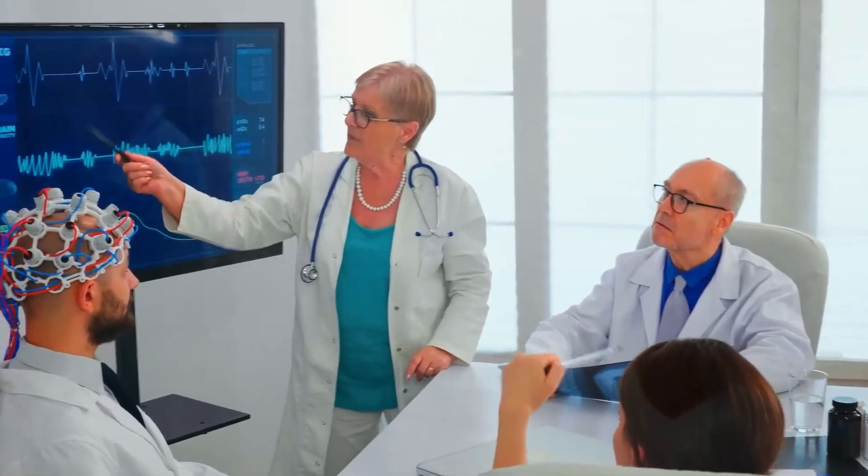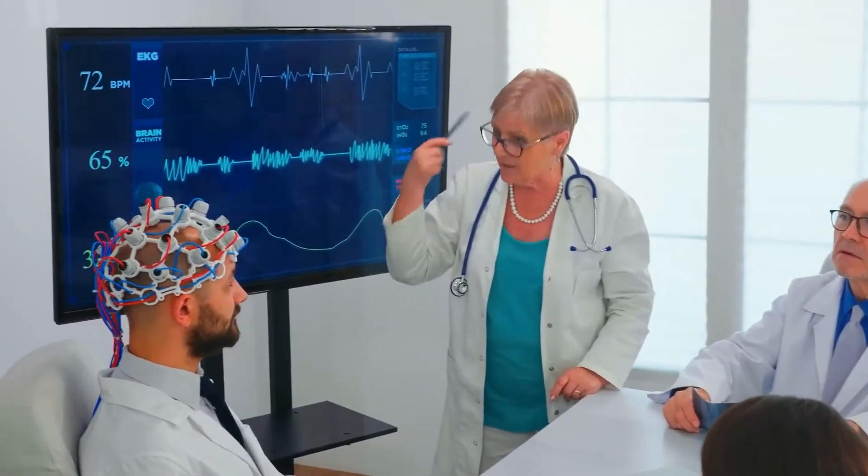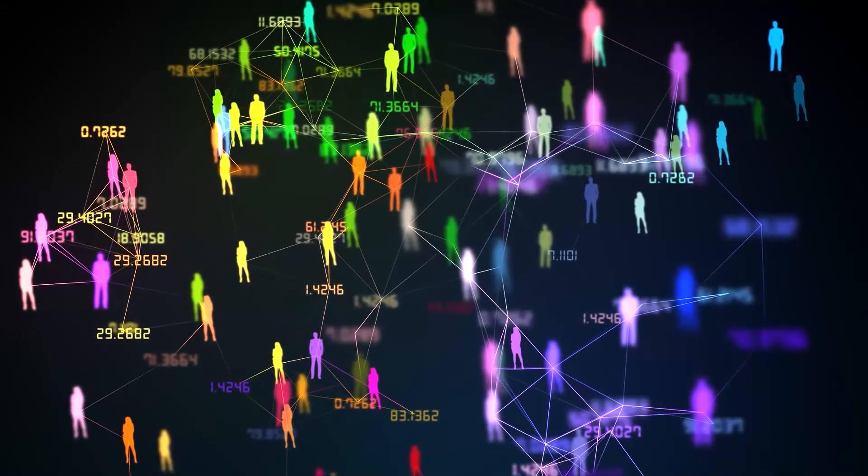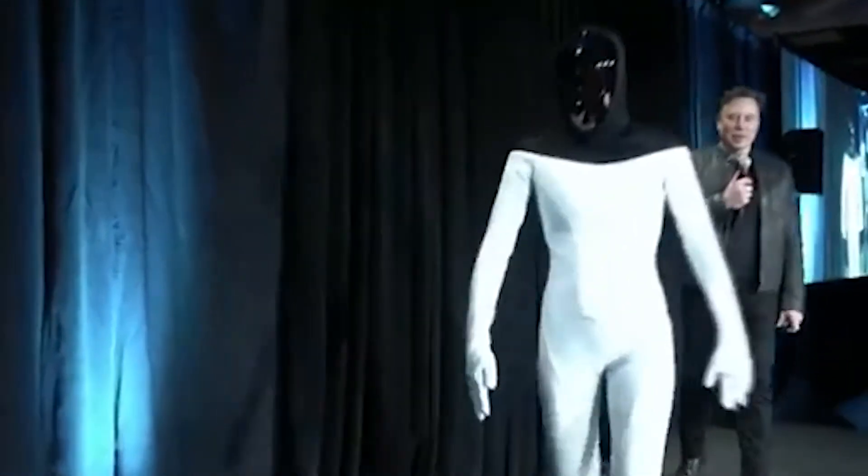Elon Musk earlier this year suggested that the first human trials for Neuralink implants would be carried out within a year, but we know how Elon Musk's deadlines always end up. The first few prototypes of the product will completely focus on offering patients medical treatment for various brain-related injuries. Neuralink is all about improving the welfare of the human population and Elon Musk's companies traditionally have been for that purpose.